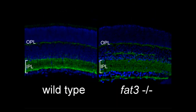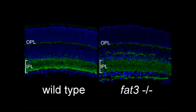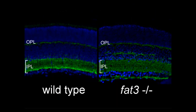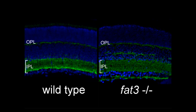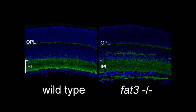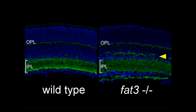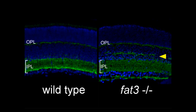Moreover, these arbors established new synaptic connections that form two additional plexiform layers, visualized here by staining for the synaptic marker VGAT. One synaptic layer interrupts the inner nuclear layer and the second forms underneath the ganglion cell layer at the innermost boundary of the retina.